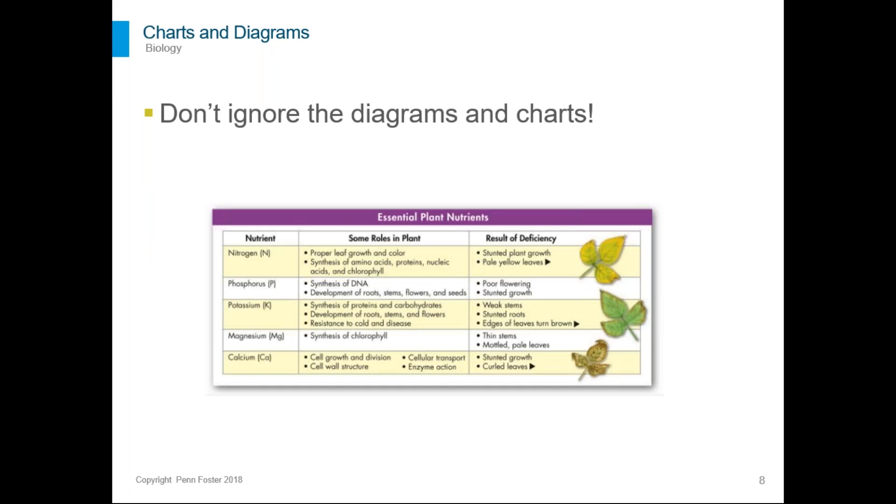Another example would be this chart on plants where it's just a really good way to organize the information. There's a lot of nutrients that plants need and it's telling you what the nutrient is, what it does in the plant, and what happens if the plant doesn't have it. So charts like this are just a good way to pack a lot of information into a small space. So you don't want to ignore those either. Now you don't have to memorize everything in this chart but it's a good idea to know where it is so that you can look up that information if you need it.